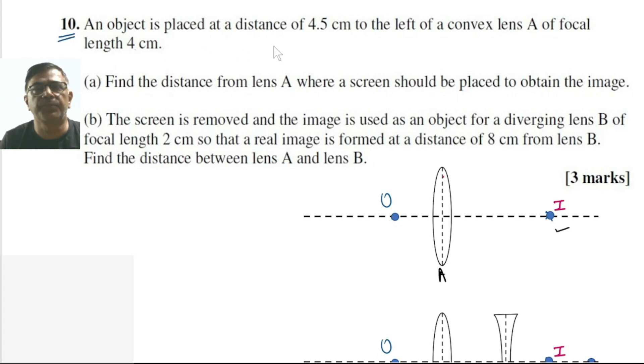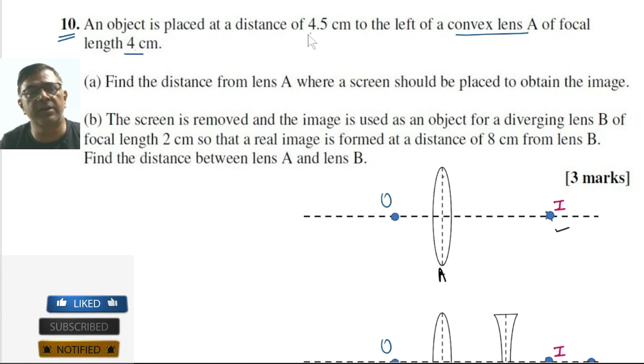In this problem number 10 we have a convex lens A of focal length 4 centimeters. An object is placed at a distance 4.5 centimeters to the left of this convex lens. We are supposed to find out where a screen should be placed to obtain the image.